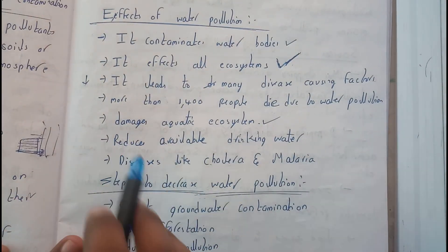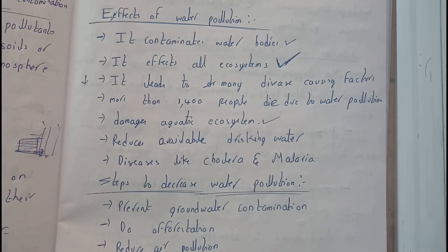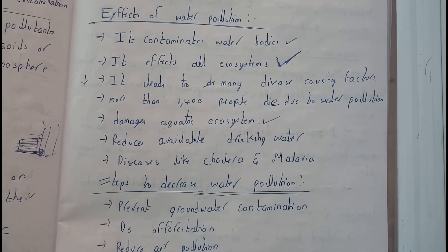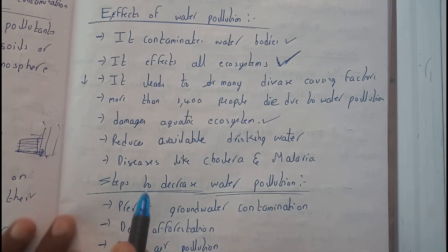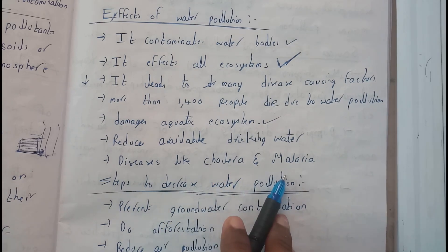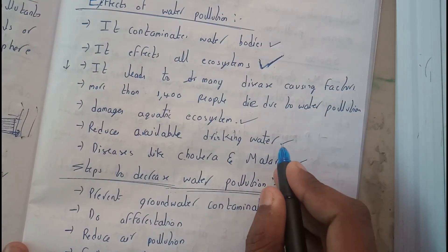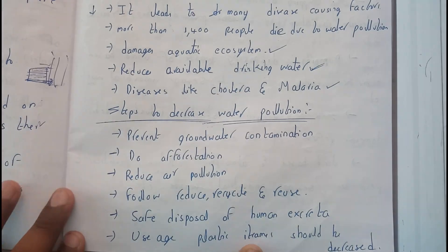Water pollution causes damage to the water ecosystem and reduces the availability of drinking water. If water is polluted, people cannot drink it — if they do, they will die or be infected with many kinds of diseases, such as cholera and malaria, which are commonly found.